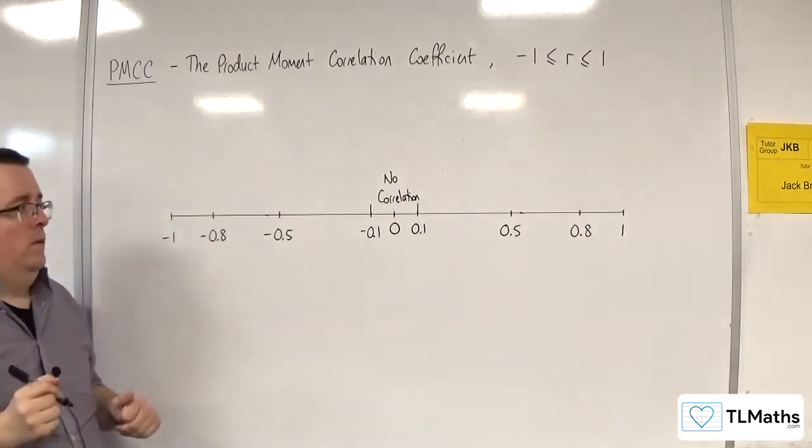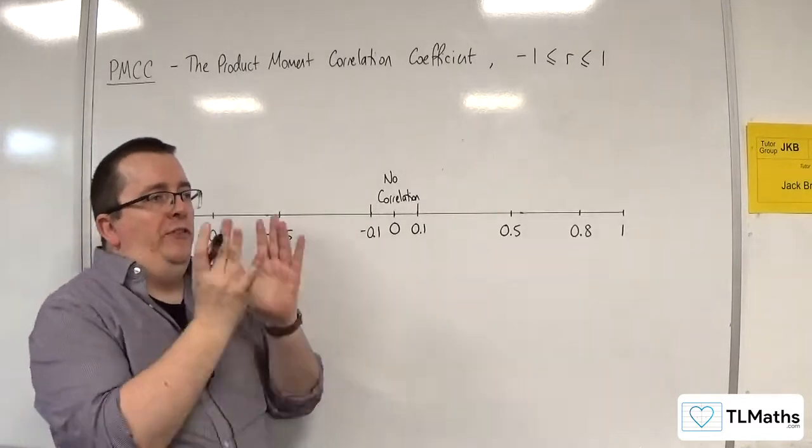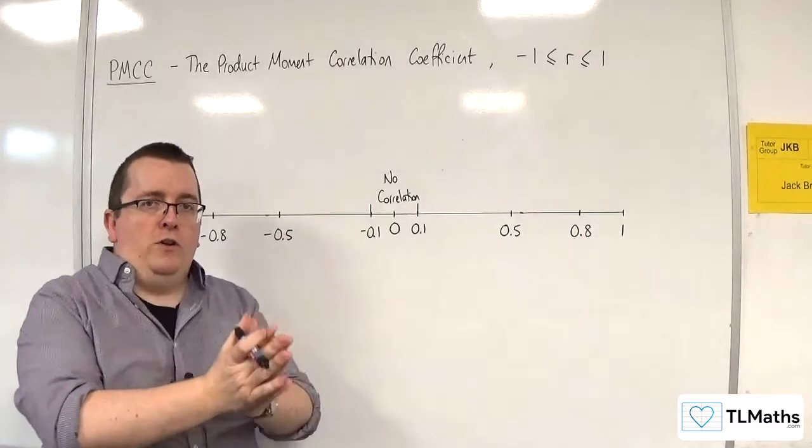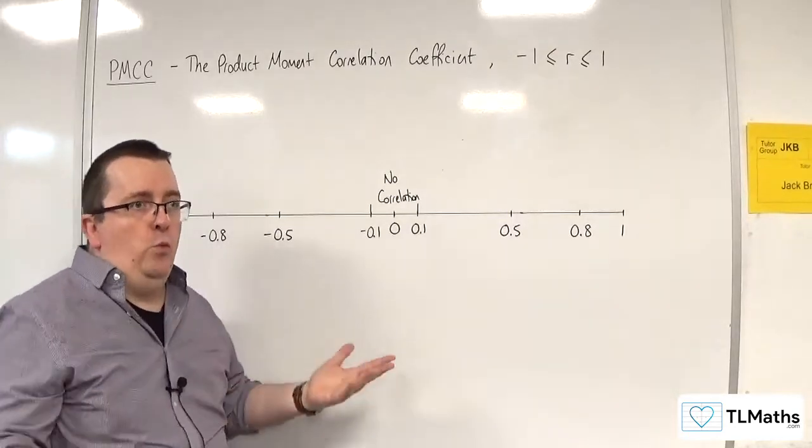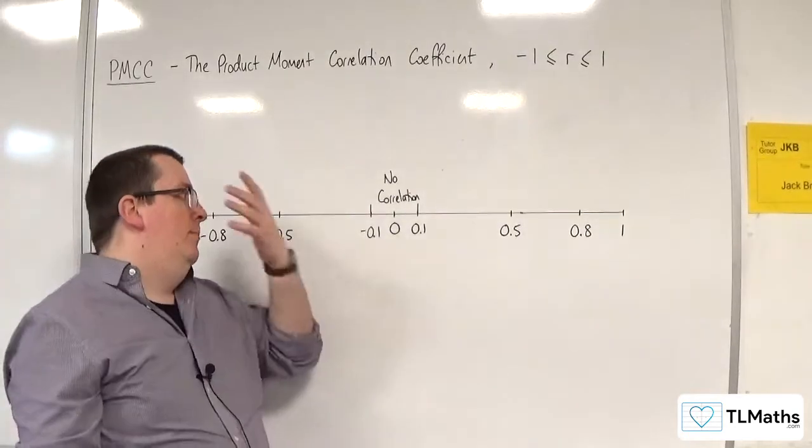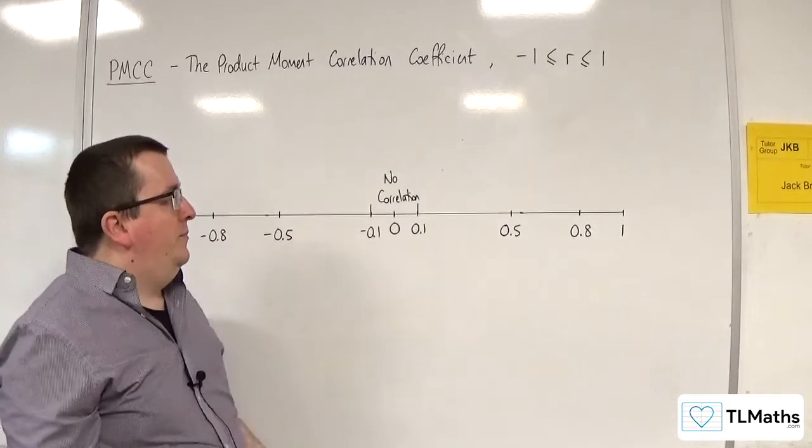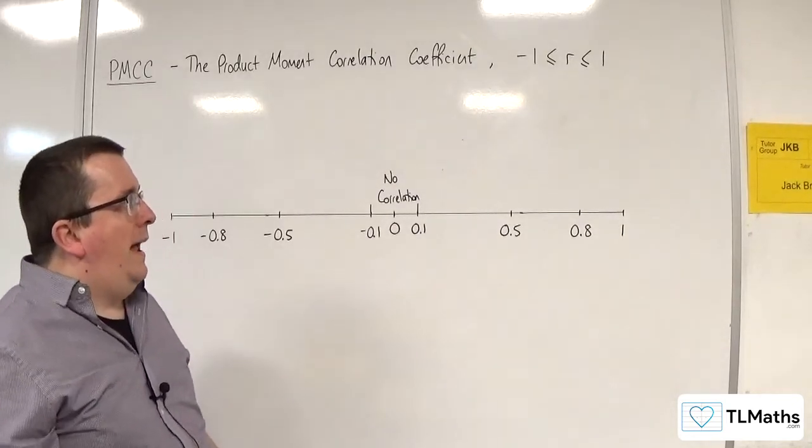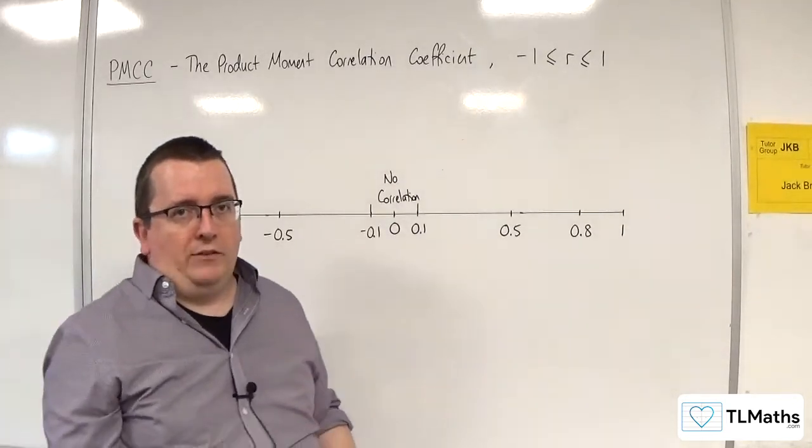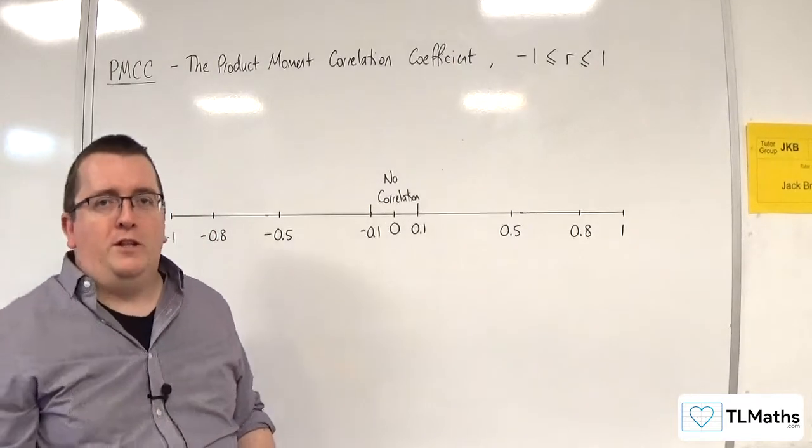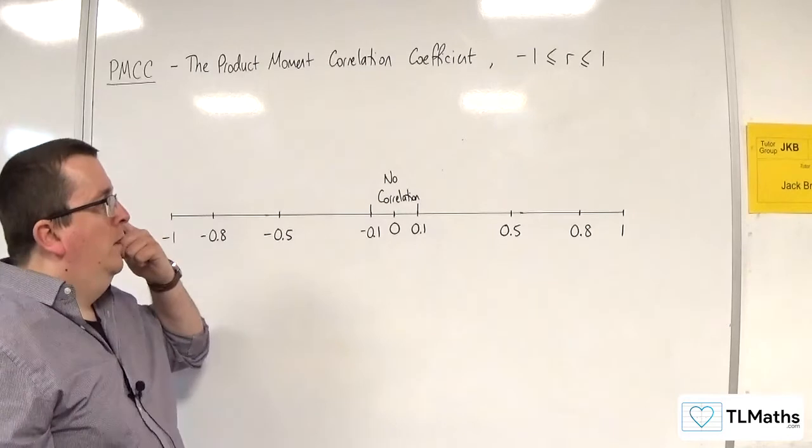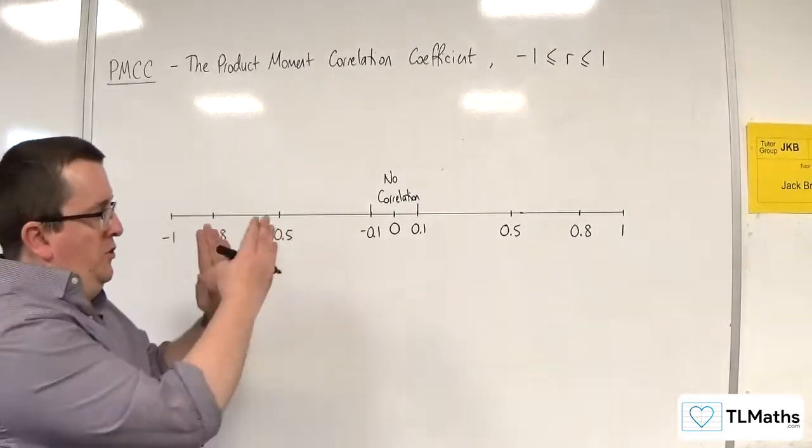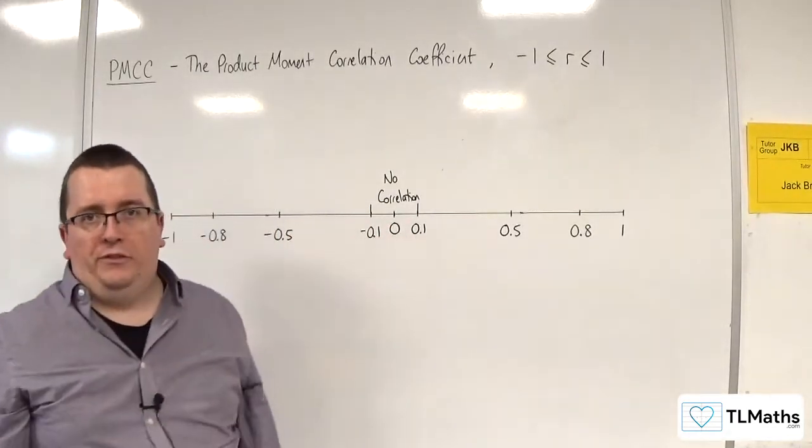You could say 0 is no correlation, and then 0.001 is very weak positive correlation. But how you interpret this in the grand scheme of things, if you had 0.001, you'd pretty much say there's no correlation, even though it's just on the side of a positive value.